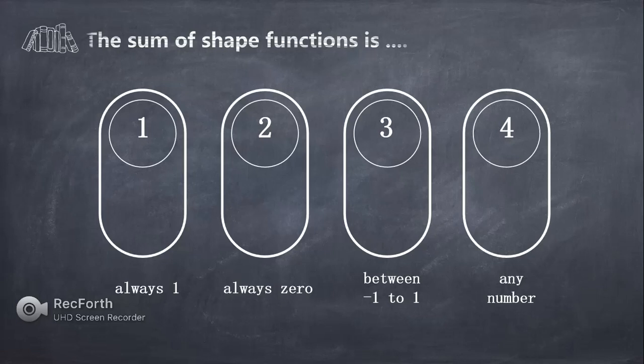The fifth question is: what is the sum of the shape functions? For any element, if you add all the shape functions — N1 plus N2 plus N3 — you should get 1. So the first option, 1, is the right answer.